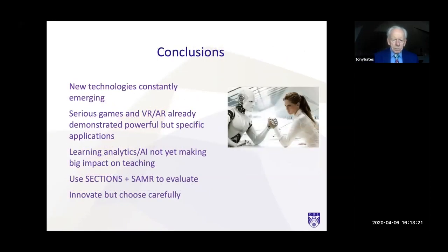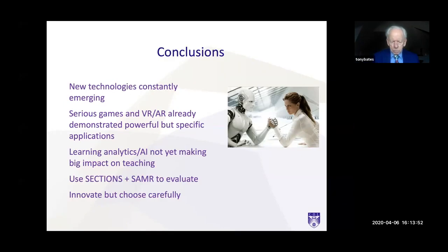In conclusion, new technologies will constantly emerge. Serious games and virtual reality have already demonstrated powerful but specific applications, but learning analytics and artificial intelligence have yet to make a big impact on teaching. With any emerging technology, you have the SECTIONS model that you can use to evaluate them — are they actually significantly changing the learning experience? Certainly virtual reality and serious games are, but the SECTIONS model looks at factors that decide whether they would make practical use.